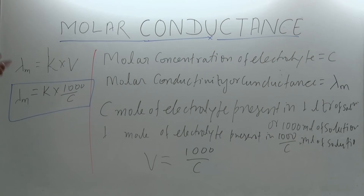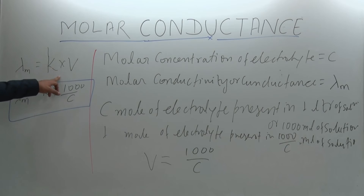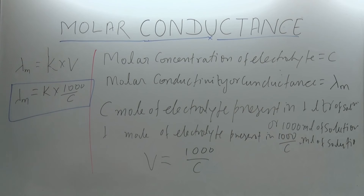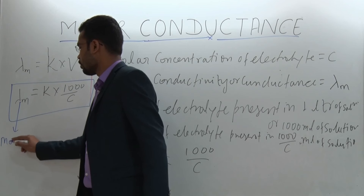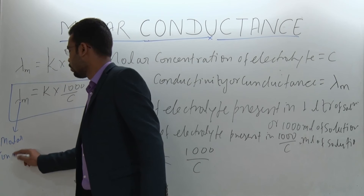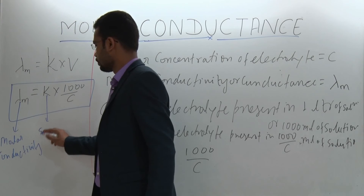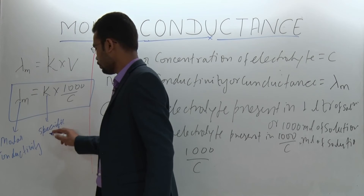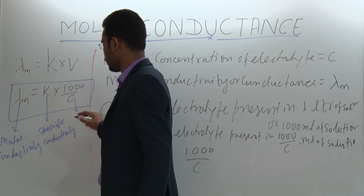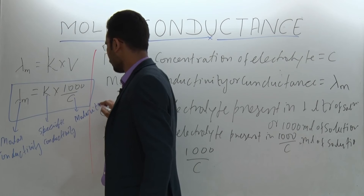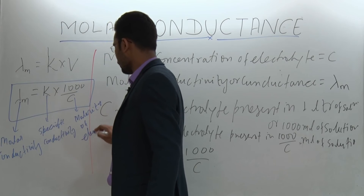Note that conductivity and molar conductivity are not the same — they are different. Conductivity is defined for 1 centimeter cube, but molar conductivity is defined for that volume which contains 1 mole of electrolyte. That is why it is called molar conductivity as well as molar conductance. K here is the specific conductivity and C is the molarity of the electrolyte.